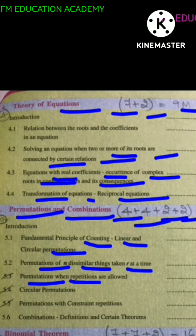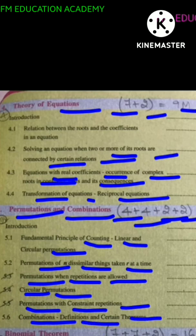Permutation when repetitions are allowed, circular permutation, permutation with constrained repetitions, combinations, definitions and certain theorems.